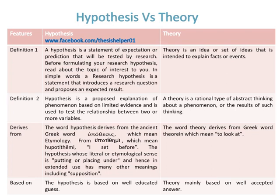A theory is an idea or set of ideas that is intended to explain facts or events. A hypothesis is a proposed explanation of a phenomenon based on limited evidence and is used to test the relationship between two or more variables, while a theory is a rational type of abstract thinking about a phenomenon or the results of such thinking.